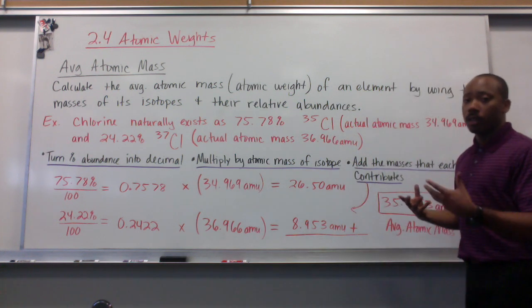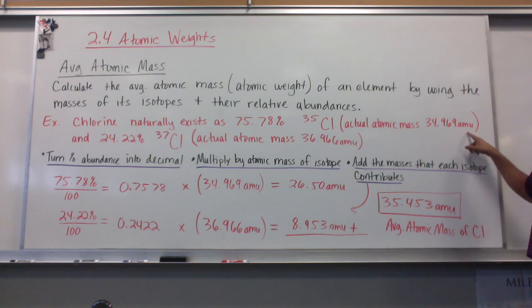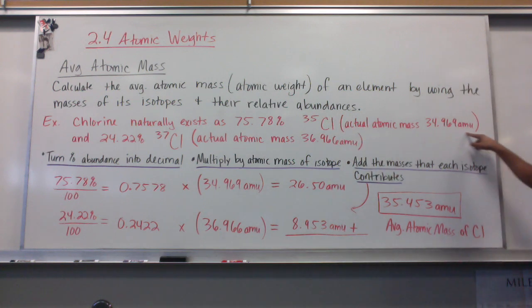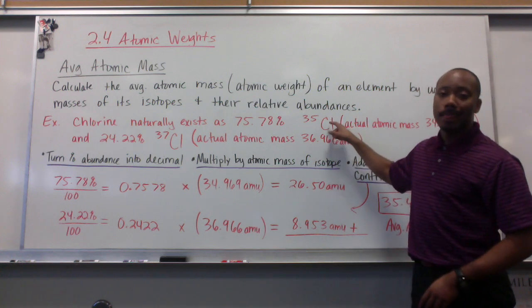The actual mass is 34.969 AMUs. Remember this is the mass number, it's the rounded number. This is the actual atomic mass of the chlorine-35.